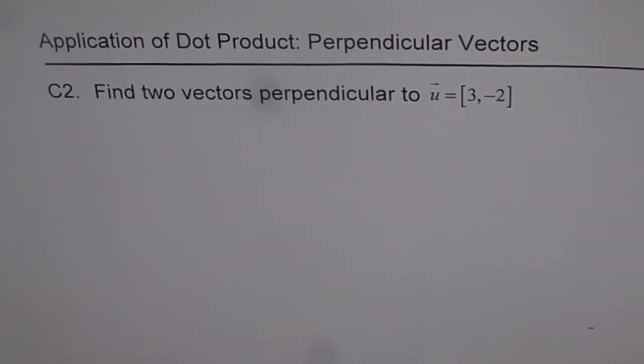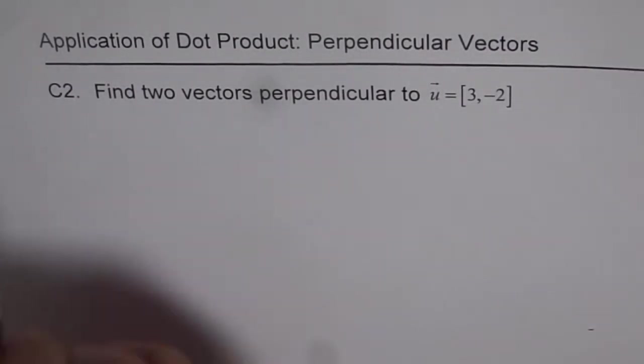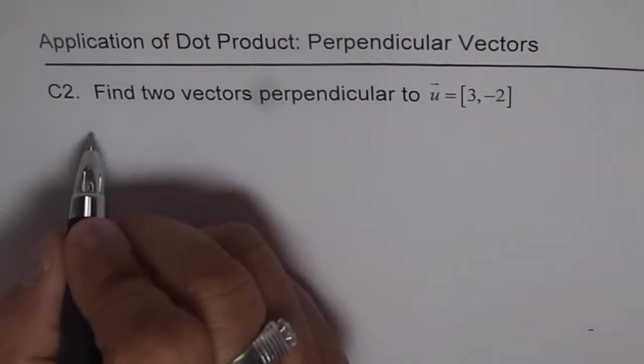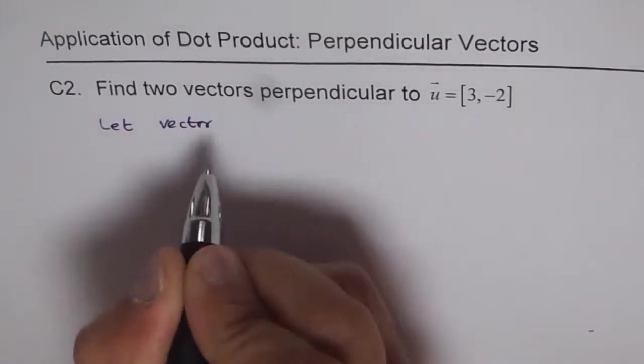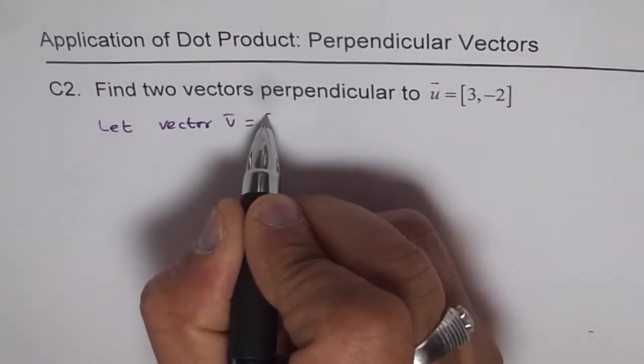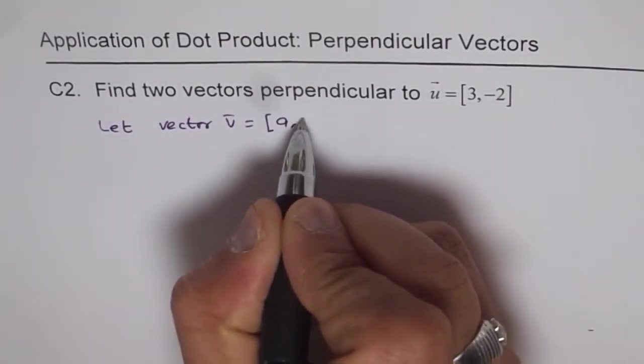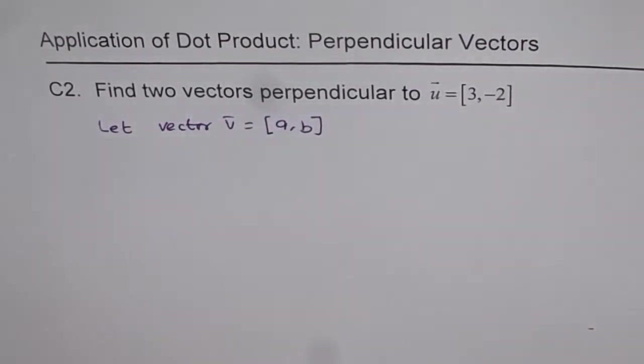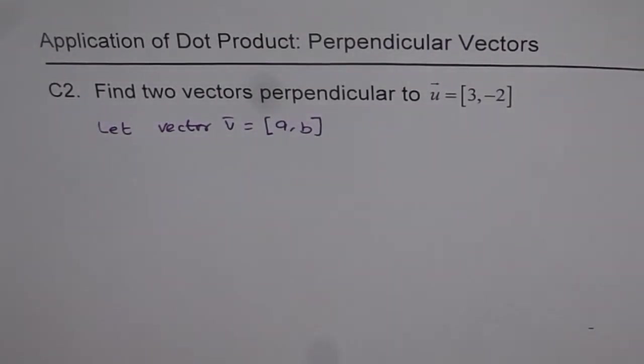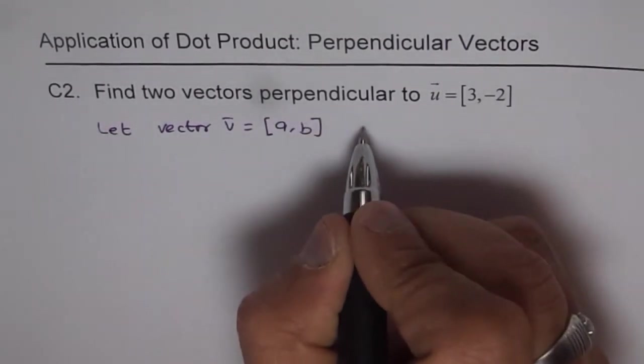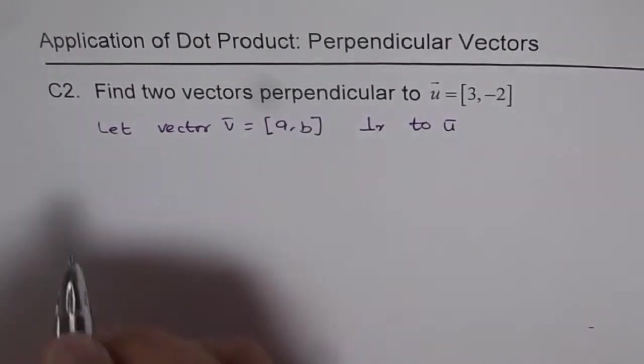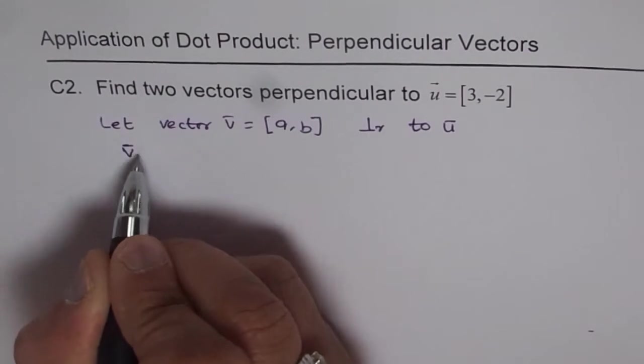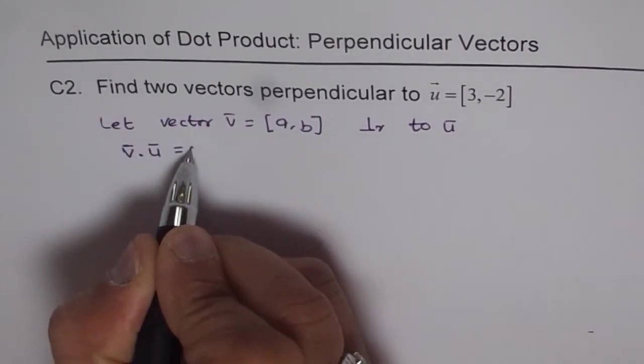Let's say that the vector v is perpendicular to u. Let vector v, which has coordinates [a, b], be perpendicular to the given vector u. In that case, we'll have v dot u equals 0.